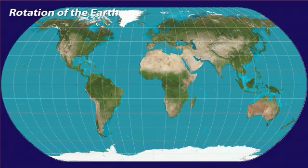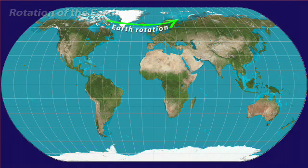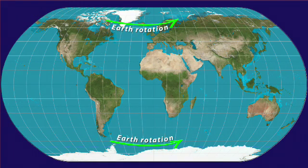The rotation of the earth combines with these vertical circulation cells to produce a characteristic pattern of surface winds. The earth rotates west to east — this is why the sun always rises in the east. As the earth rotates beneath it, the Hadley cell circulation produces a characteristic east-to-west surface wind.